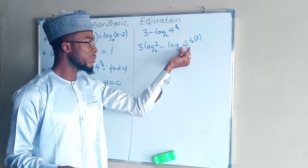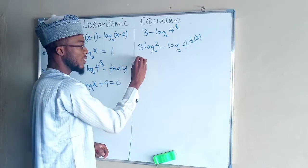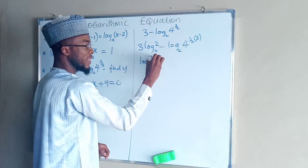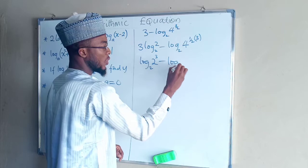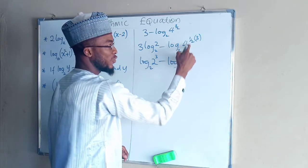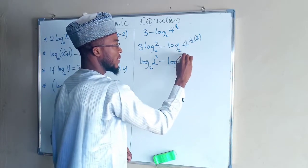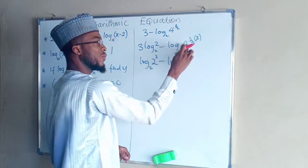So we have log 2 power 3 minus log of 2 power 3, because square root of 4 is 2.